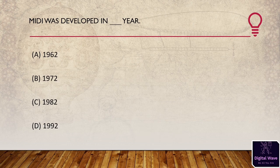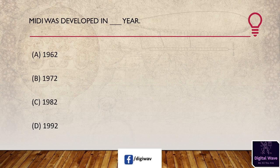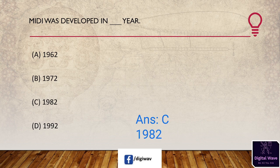Question 5: MIDI was developed in which year? Options are 1962, 1972, 1982, and 1992. The right answer will be 1982.